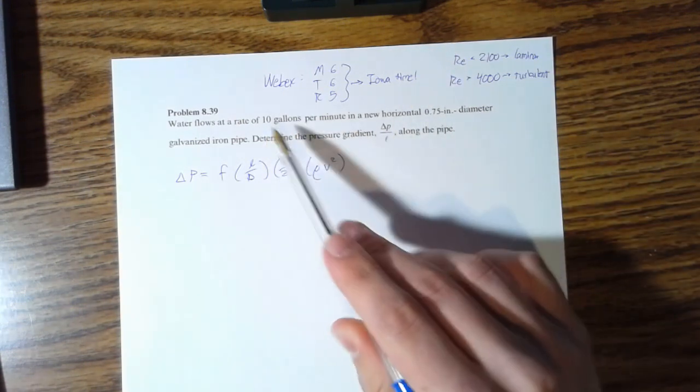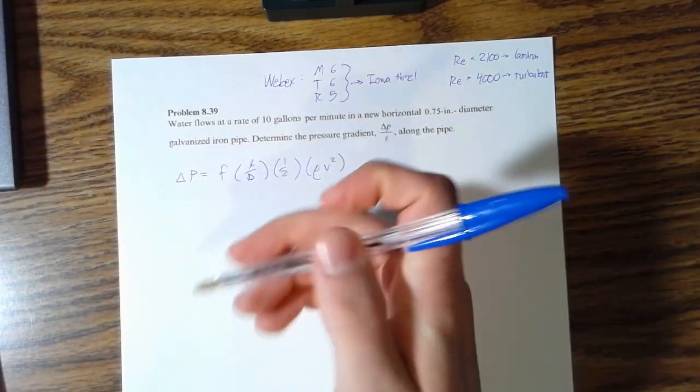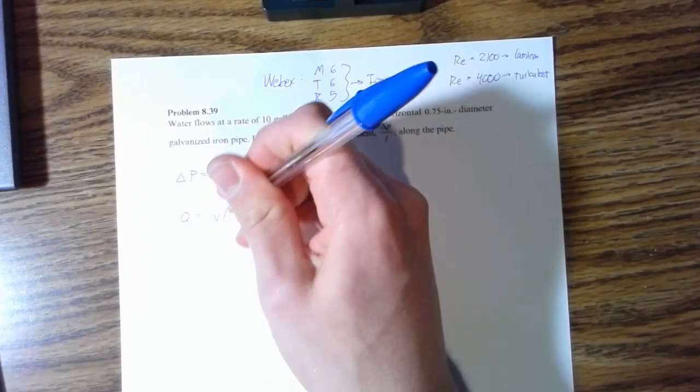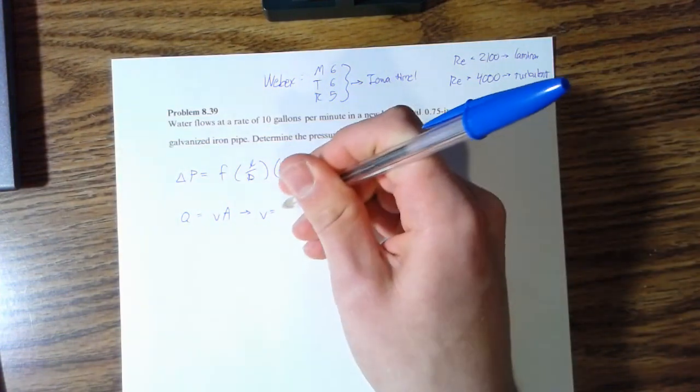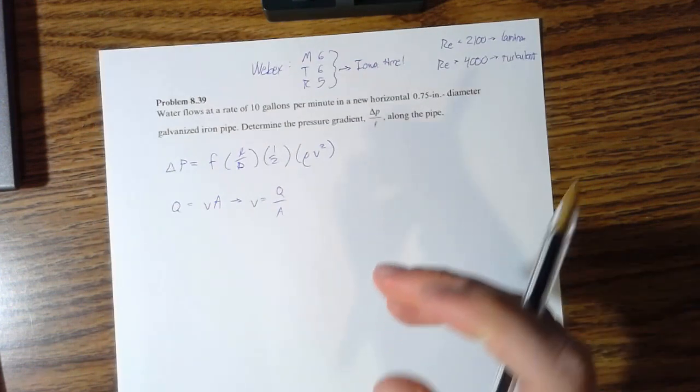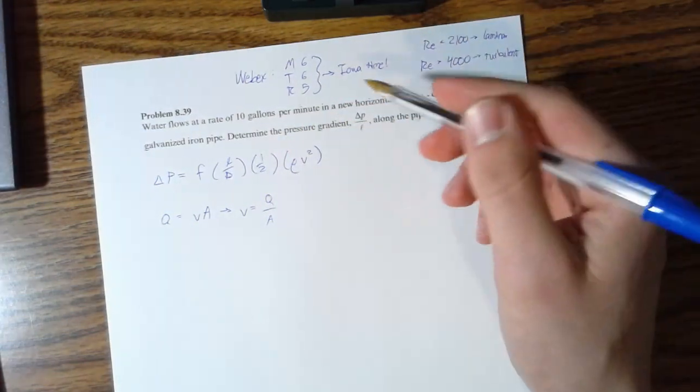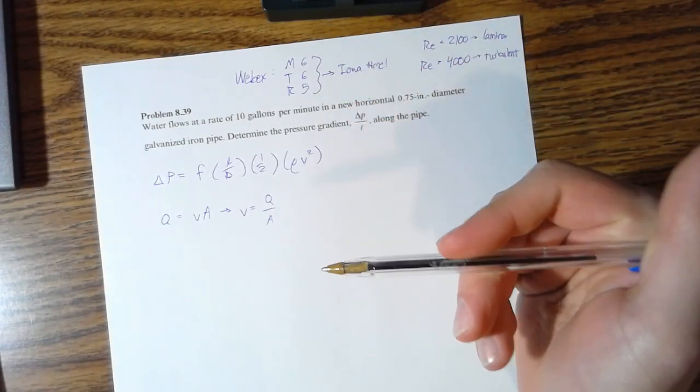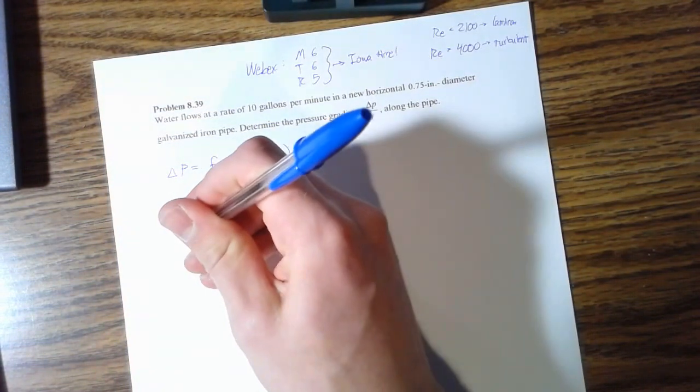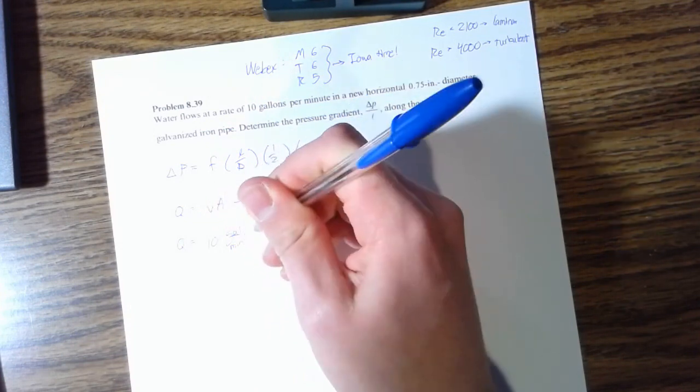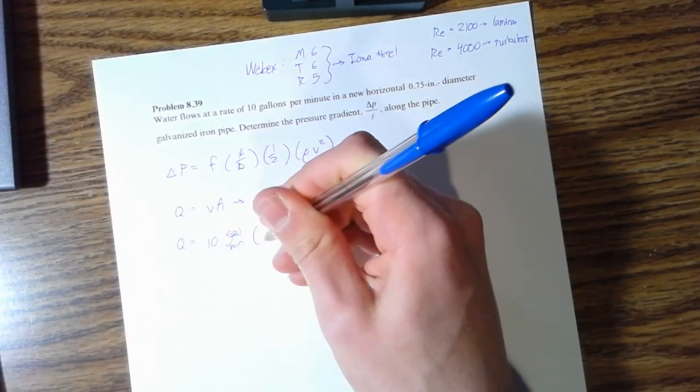We can get velocity because we also know the area from this flow rate. Again, we're working with our continuity equation, so Q equals V times A, or since we're solving for V, it's Q over A. Our flow rate is given in gallons per minute, so we'll convert that from gallons per minute into feet cubed per second, that way we can get a unit we're able to work with.